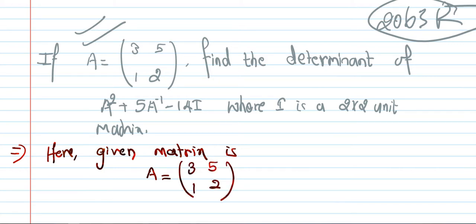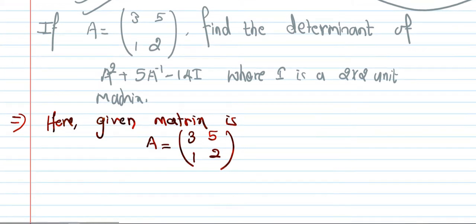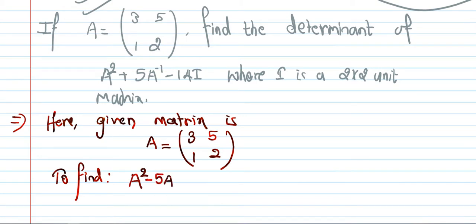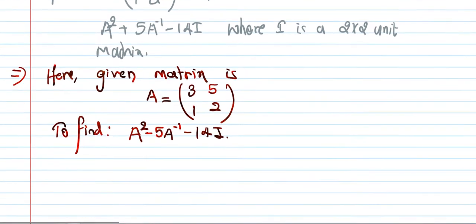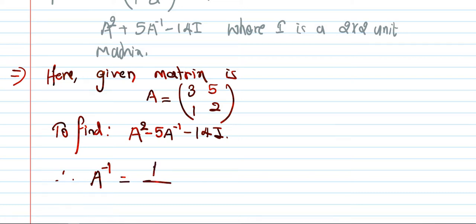We have to find A squared plus 5A inverse minus 14I. So first of all I will calculate A inverse. A inverse is equal to one upon determinant of A into adjoint of matrix A.